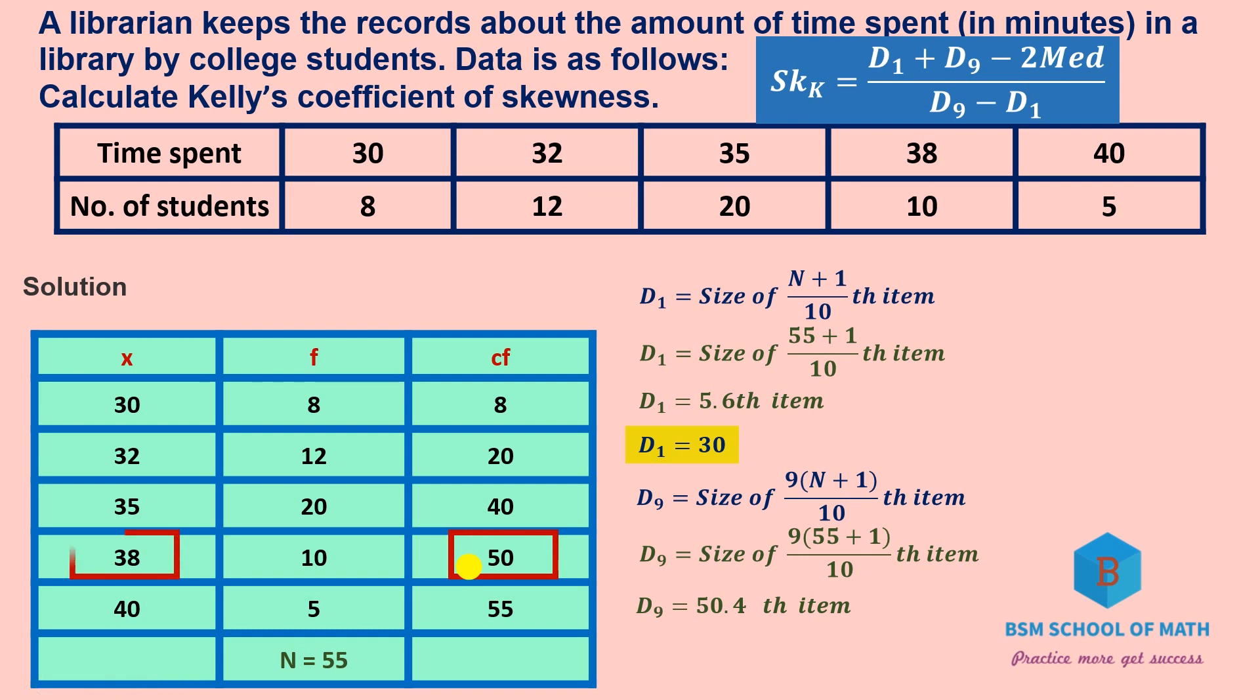Next, the median equals (N plus 1) divided by 2 item, or you can use D5 as 5(N plus 1)/10, which gives the same answer. 55 plus 1 divided by 2 is 56 by 2 equals 28. At 28, the corresponding value is 35.